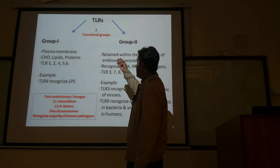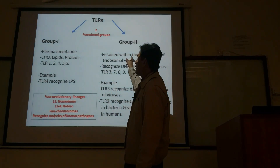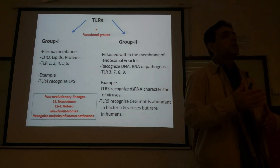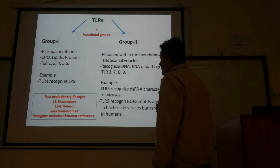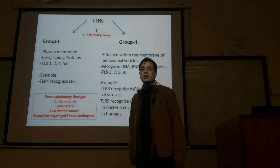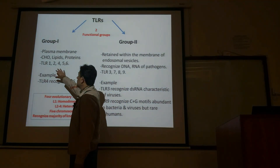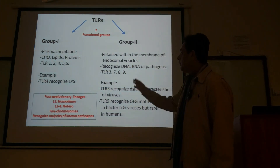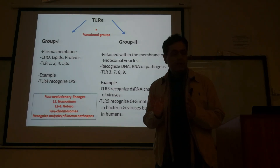Looking at the functional regions of toll-like receptors, there are two functional groups: group one and group two. Group one toll-like receptors are part of the plasma membrane — present on the surface — and these receptors recognize carbohydrates, lipids, and proteins. The receptors that recognize these molecules are TLR1, 2, 4, 5, and 6 — they make up group one.